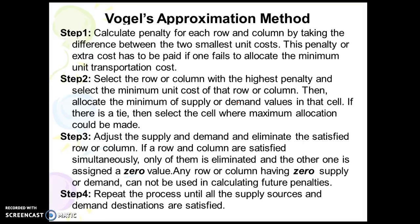The next method is Vogel's Approximation Method (VAM). Instead of finding the lowest cost cell directly, we calculate a penalty for each row and column by taking the difference between the two smallest unit costs. This penalty represents the extra cost that has to be paid if one fails to allocate to the minimum unit transportation cost cell.